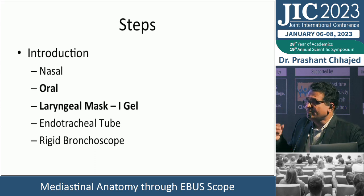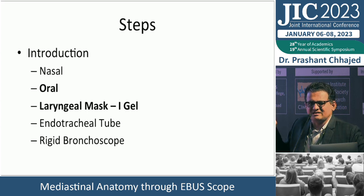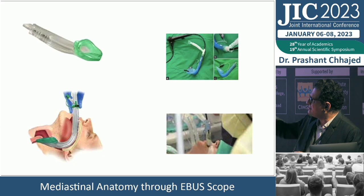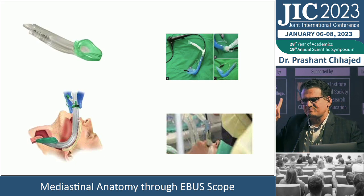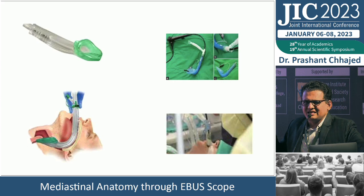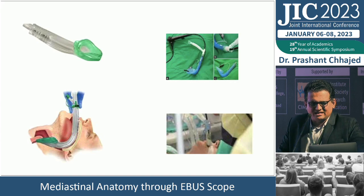EBUS is typically done via the oral route, though we initially did it nasally before switching. The laryngeal mask airway (LMA or iGel) is a useful tool that can be utilized efficiently, though be aware that the scope can get damaged earlier with an iGel. Choose the iGel for selected cases — particularly short-neck, extremely obese, or thick-neck patients where it provides easier access.